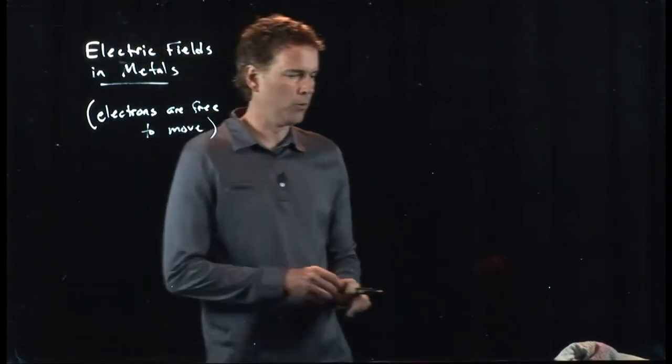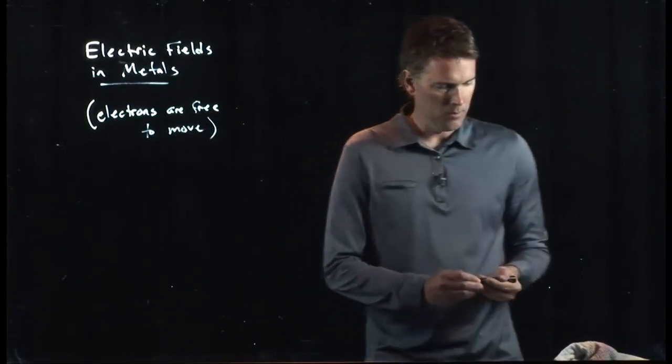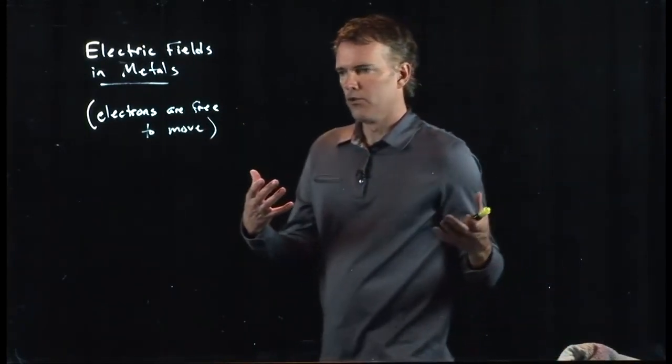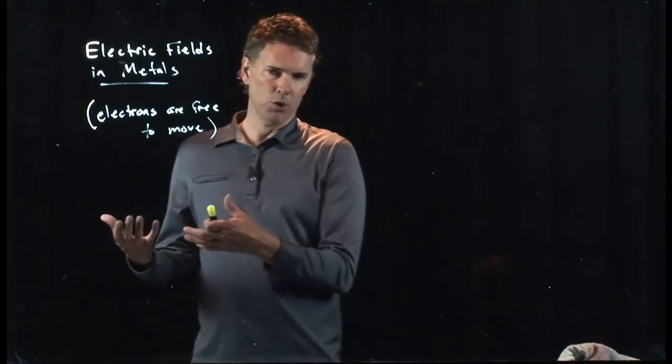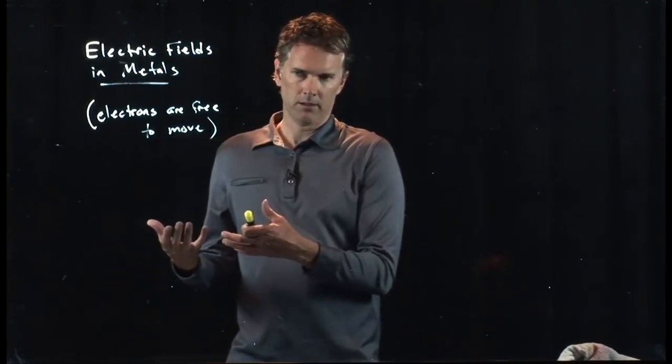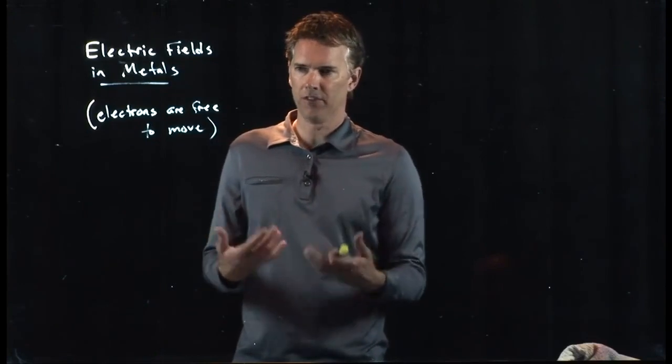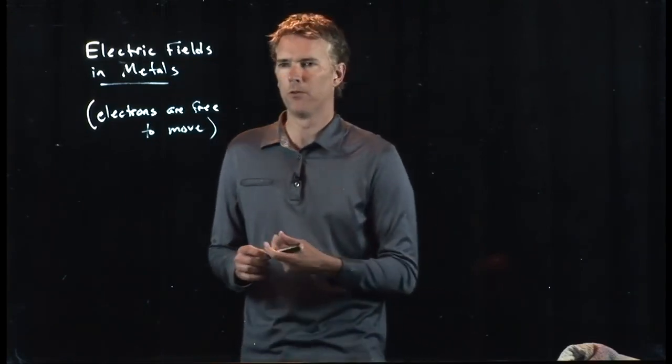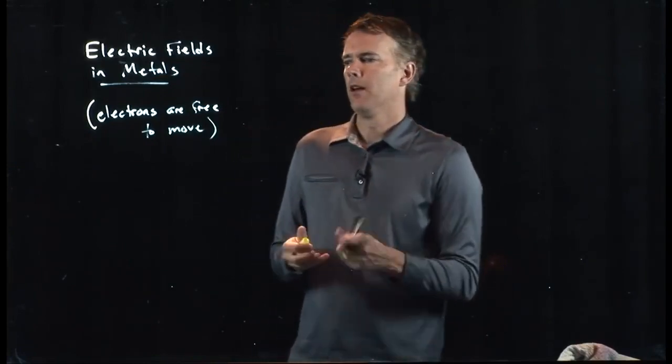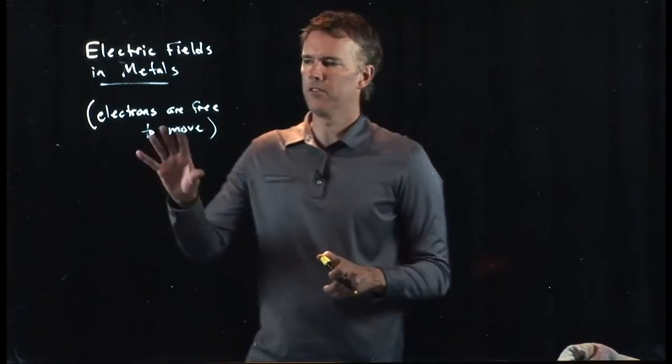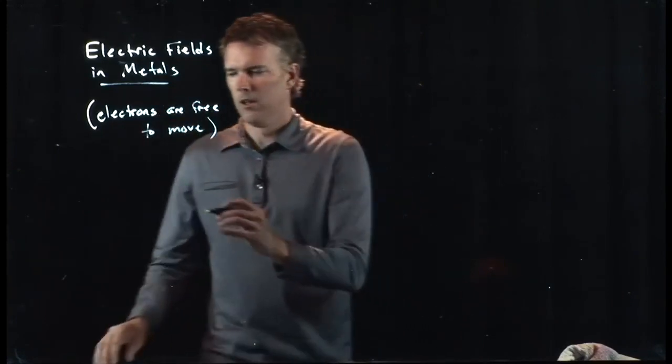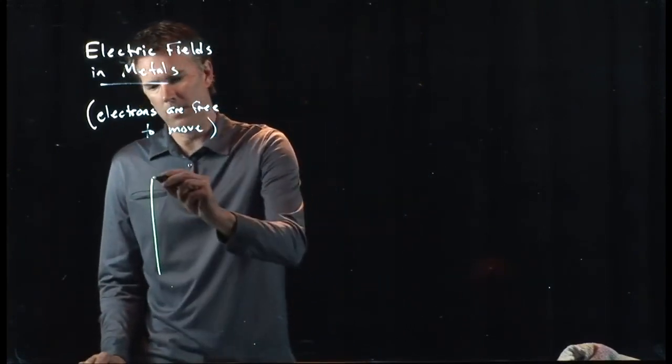Later on, we're going to learn about resistance, which has to do with trying to not let them move so easily. So all conductors have a resistance associated with them, unless it's a superconductor, then the resistance goes to zero. But for now, let's not worry about any resistance. Let's just pretend those electrons are basically free to move.